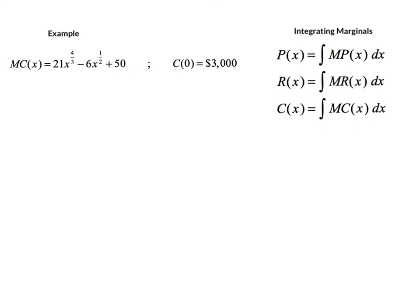Here's an important business calculus application of particular solution antiderivatives: integrating marginal functions in business to obtain the original functions. As a quick reminder, the marginal profit mp(x) is the derivative of the profit — the instantaneous rate of change of the profit. So if we take the antiderivative or integral of the marginal profit, we obtain the profit function. Similarly, integrating marginal revenue gives revenue, and integrating marginal cost gives the cost function.